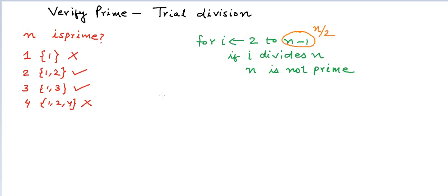This sounds good. But can we do something better here? Let us see. If a divides n, then there must exist another number b that should be equal to n by a and b should also divide n. So we should have a relationship like a into b is equal to n.